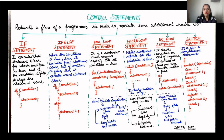Control statements are of various types: the if statement, if-else statement, for loop statement, while loop statement, do-while statement, and switch statement. Let us see one by one how these control statements work.